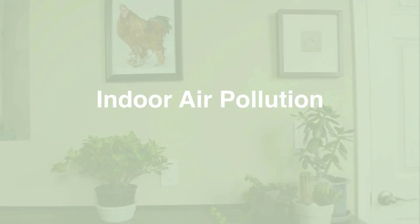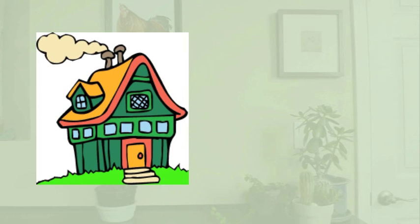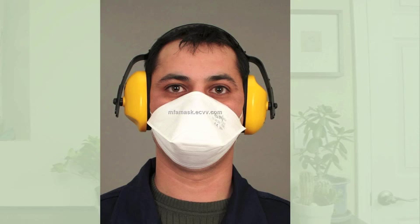Indoor air pollution is, for poor people, the world's most serious air pollution problem. Levels of 11 common pollutants are generally 2 to 5 times higher inside U.S. homes and commercial buildings than outdoors, and as much as 100 times higher in some cases. Pollution levels inside cars in traffic-congested urban areas can be up to 18 times higher than outside levels. The health risks are magnified because most people in developed countries spend 70 to 98 percent of their time indoors or inside vehicles.